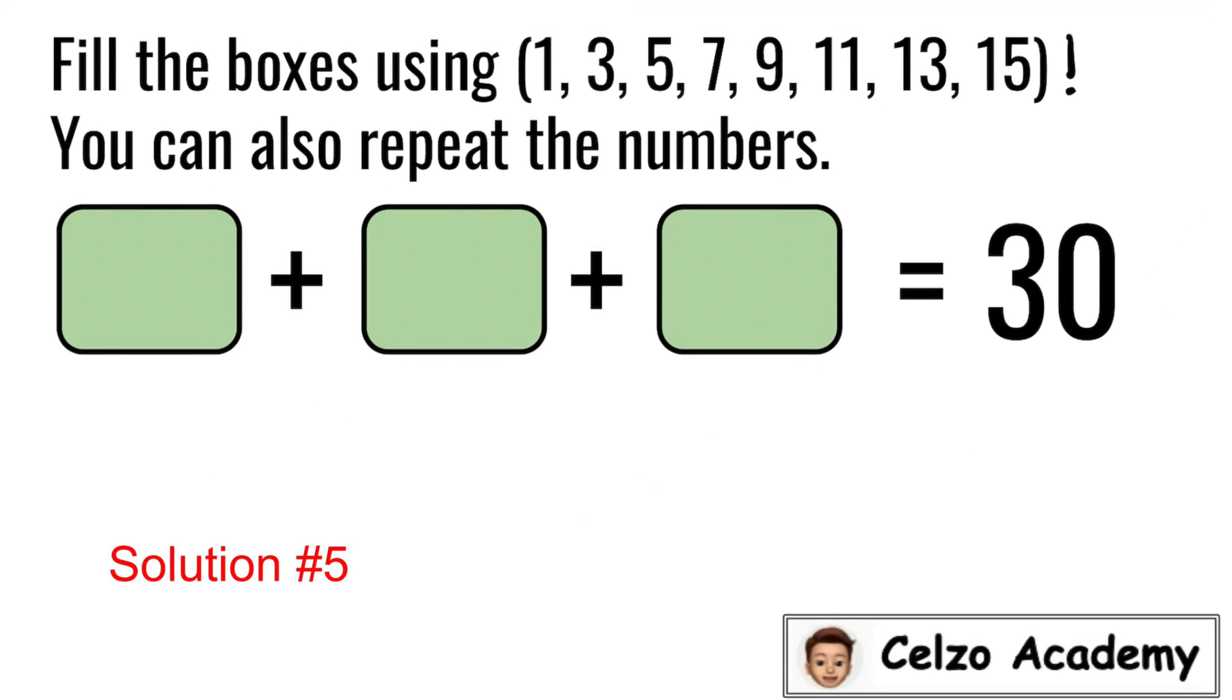Here's another one, and please let me know if you agree with this solution. For the first box, I will write 13. For the second box, I will write 11. And for the third box, I will write 5. But wait, that's not equal to 30. 13 plus 11 is 24. 24 plus 5 is 29. So I need to have one more to make it a 30. Can you read what I'm thinking?